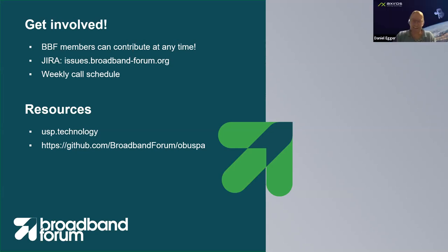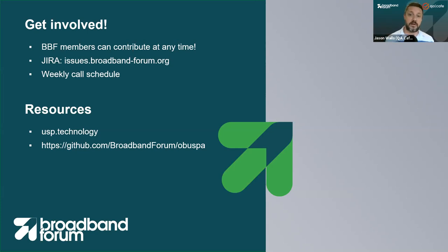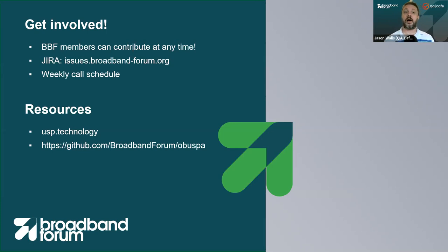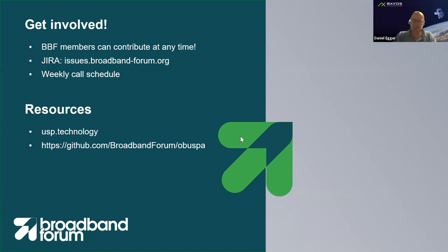If you're a Broadband Forum member, please sign up for those calls and you'll be able to track the progress and contribute. You can find everything about USP at usp.technology, and you can find the open source agent on the Broadband Forum's GitHub account. We are also working on getting draft releases of USP and TR-181 out as soon as possible — it should be in a couple of weeks. We'll publish draft versions of the upcoming standards for people to have a look at what's coming, and if they want, they can get involved earlier.